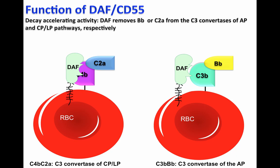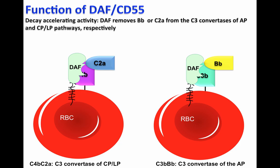Luckily, we have DAF on the cell surface of red blood cells, which recognizes the C3 convertases and displaces C2a and Bb from the C3 convertases, protecting red blood cells from complement-mediated attack. DAF accelerates the decay of the C3 convertases, and as a consequence, no further C3b deposition will occur.